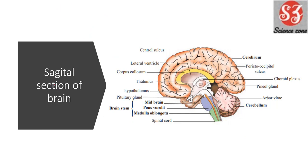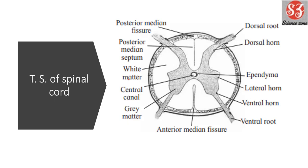Next is sagittal section of brain. Just as the internal structure of heart was important, the sagittal structure of brain is also important. You may skip other brain structures but make sure to do this diagram. Next is TS of spinal cord — this is important for questions like 'write a short note on spinal cord' or 'explain spinal cord in detail.'